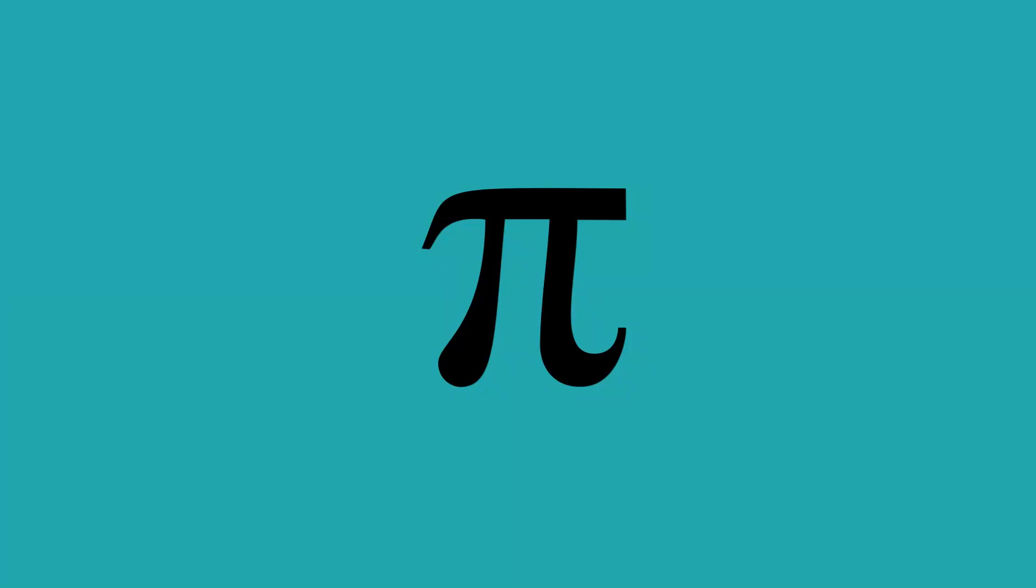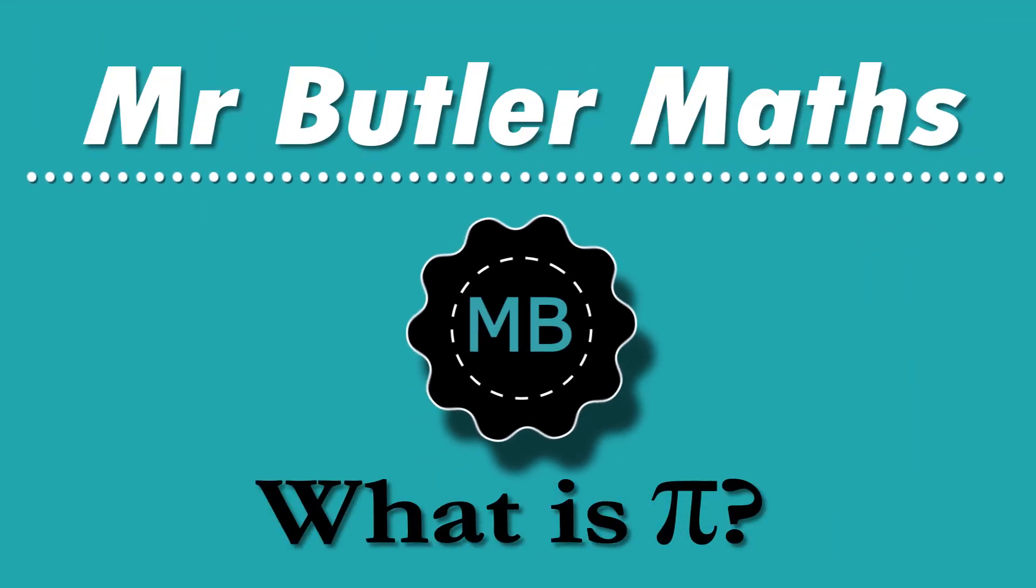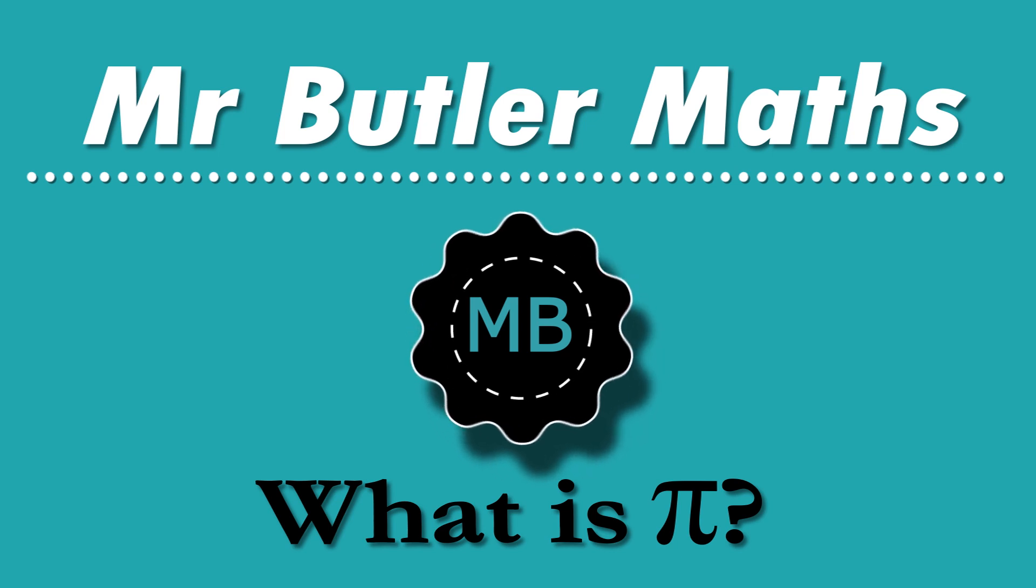When we think about pi, we often think about this formula. The circumference of a circle is equal to pi times the diameter. But what actually is pi, and why do we use it in this formula? This is Mr Butler Maths, and in this video we're going to use a little bit of maths to deepen our understanding of pi.